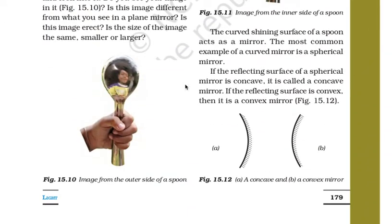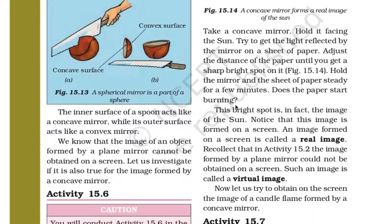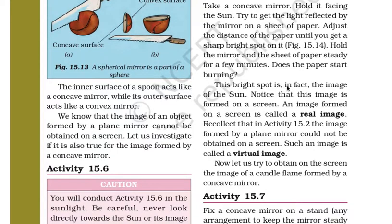As we have discussed in the earlier part, this inner part is concave and the outer part is convex. So take a concave mirror and hold it facing the sun. Try to get the light reflected by the mirror on a sheet of paper. Adjust the distance of the paper until you get a sharp bright spot on it. Hold the mirror and the sheet of paper steadily for a few minutes. Does the paper start burning? This bright spot is in fact the image of the sun, and notice that this image is formed on a screen.